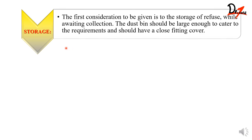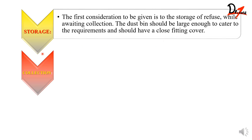Now let's see what the steps are. The first one is storage — we all have to collect waste in a larger dustbin and it should have a close-fitting cover. Then the next is the collection part — you can collect the waste from each house, which is the best method.